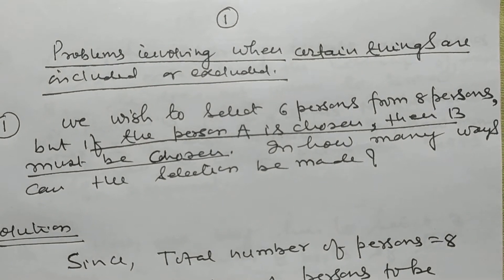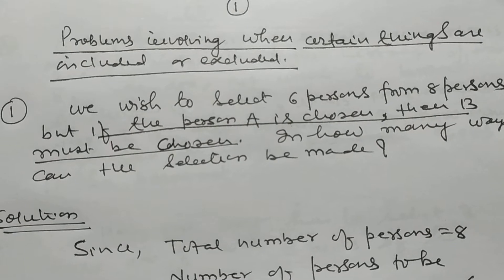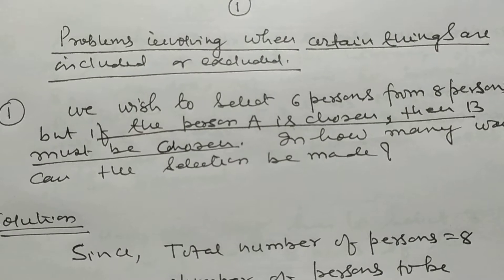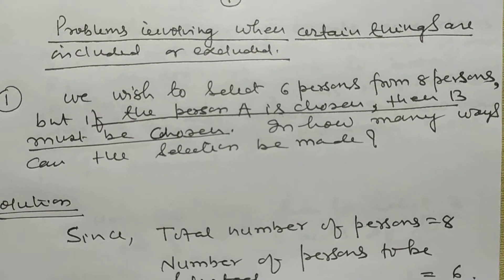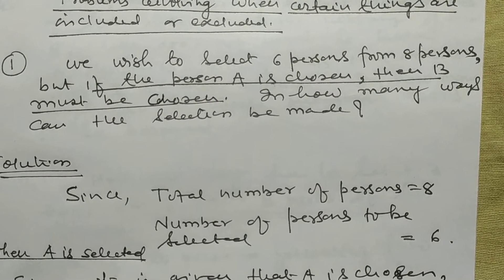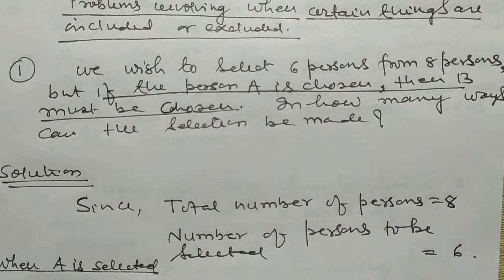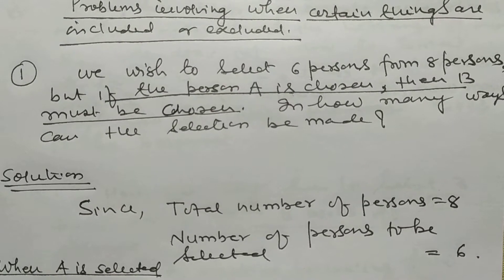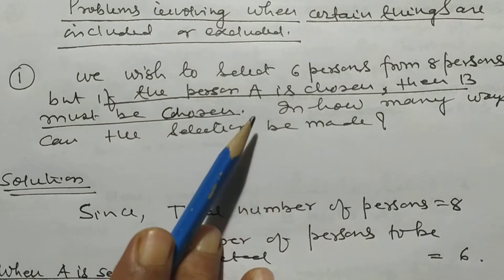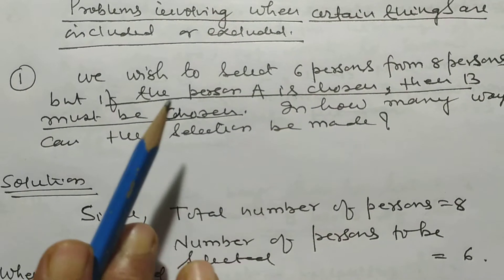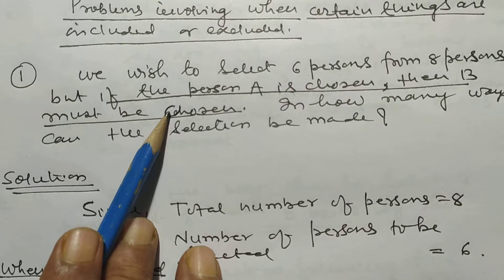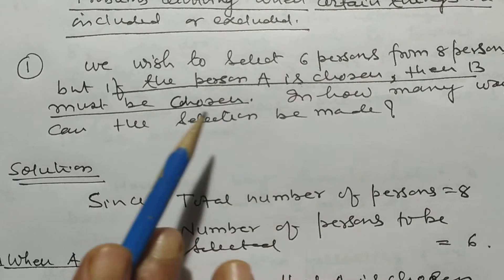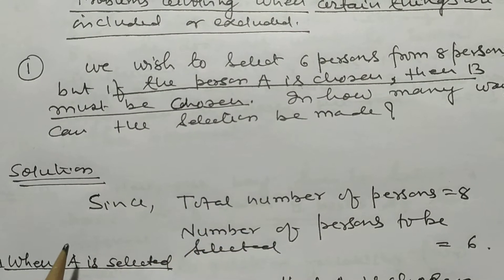My dear students, now I want to discuss the problem in which certain things are included or excluded. Suppose we solve problem number one: we wish to select 6 persons from 8 persons, but if person A is chosen, then B must be chosen. In how many ways can the selection be made?